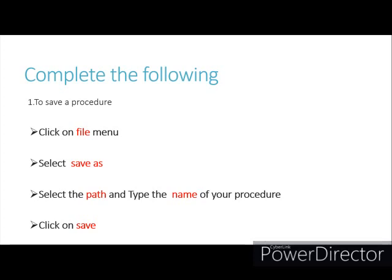Next, complete the following. Number 1: to save a procedure, click on the File menu option, select Save As option, a dialog box will appear, select the path, type the name of your procedure in the file name box, then click Save.